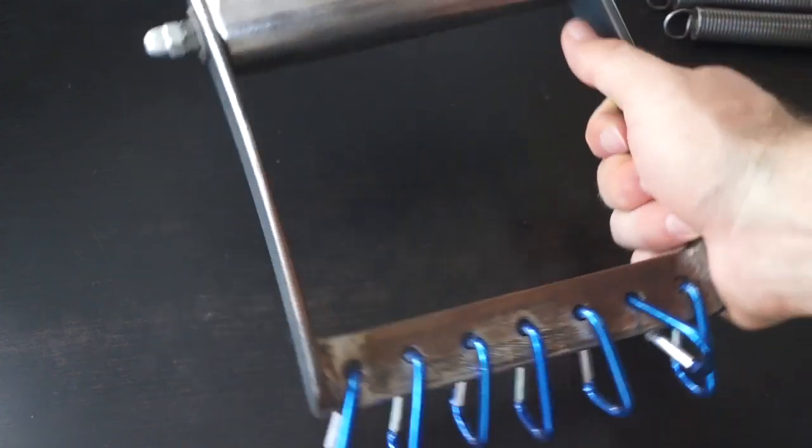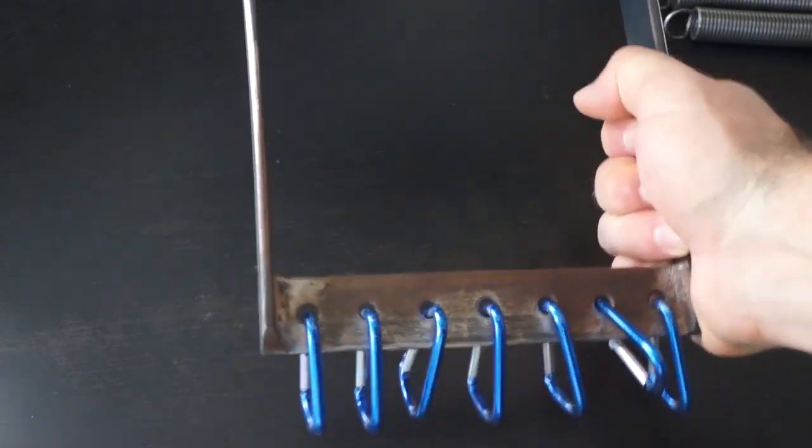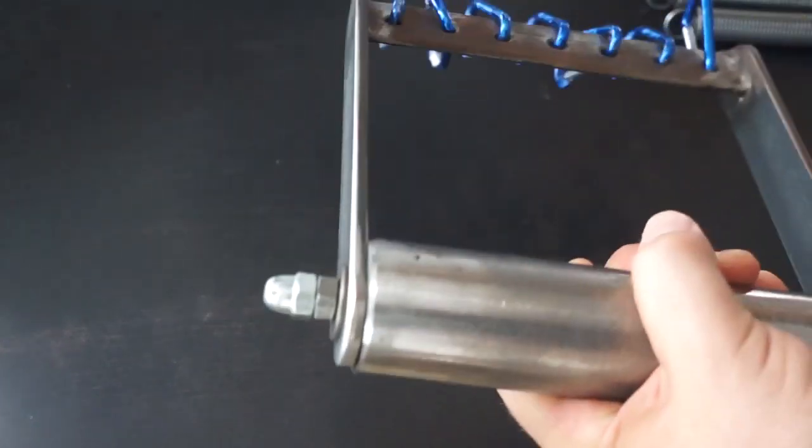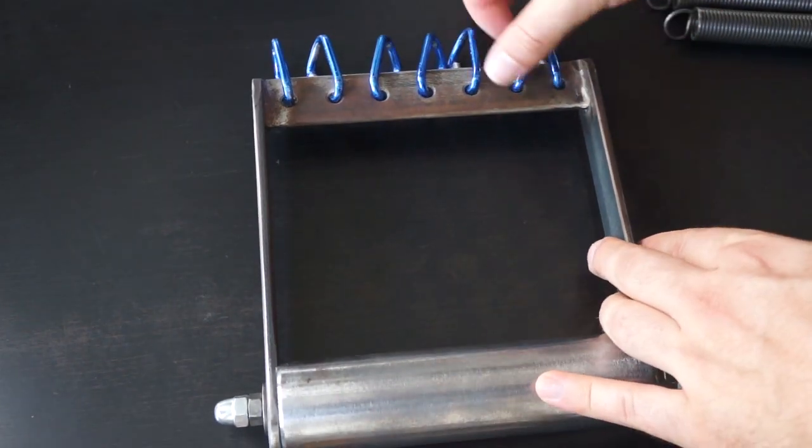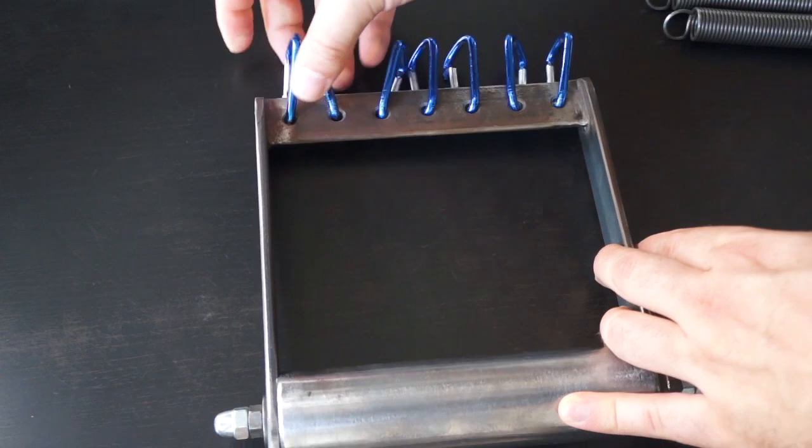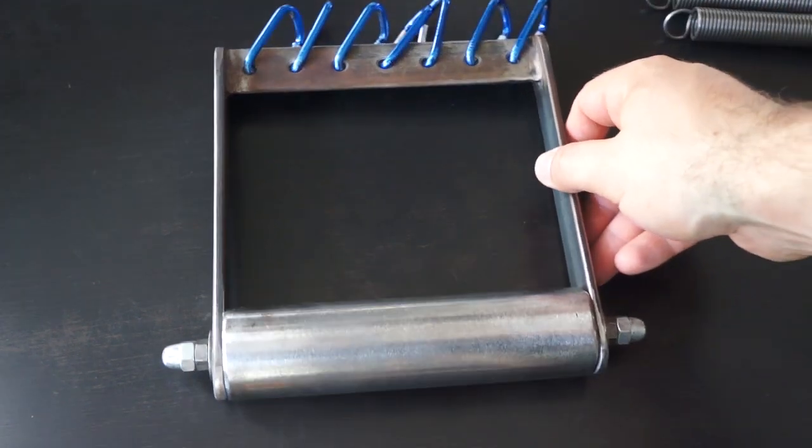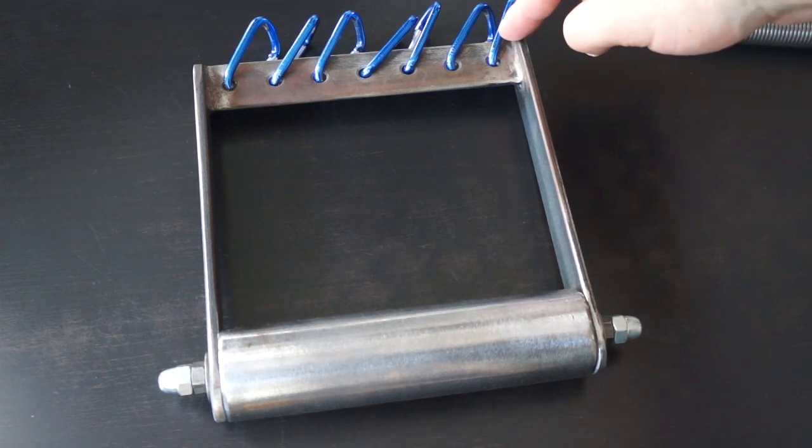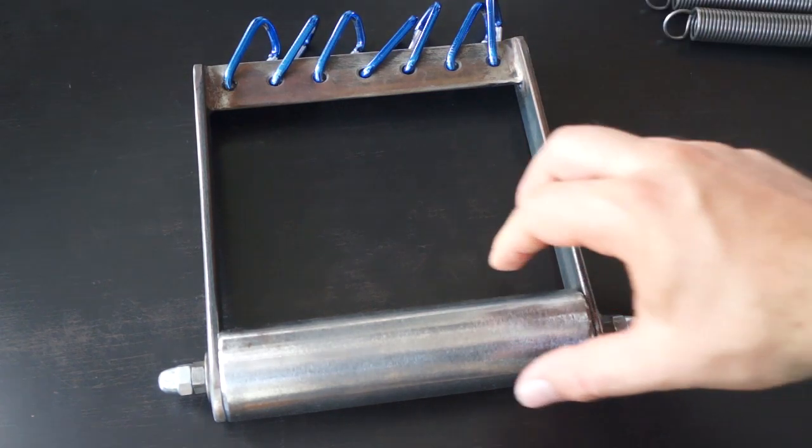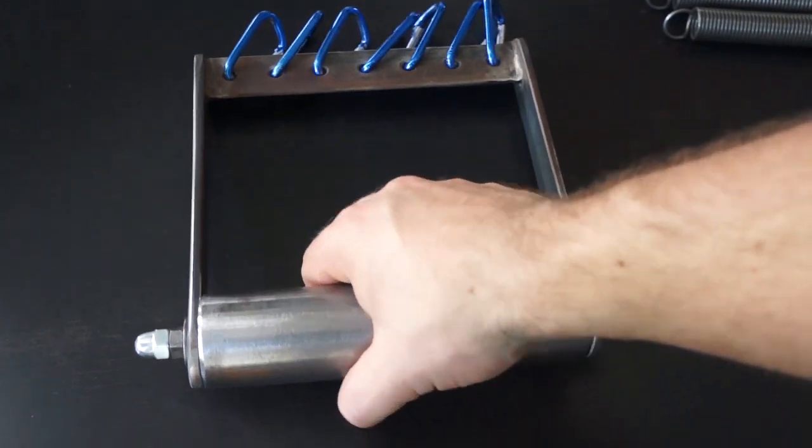Now I just have the grip piece left. This way, the grip piece appears in the technical drawing. Here at the top are the holes, the side, and here at the bottom the grip piece.